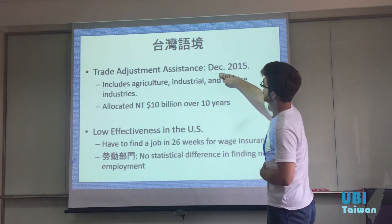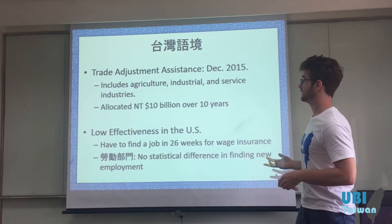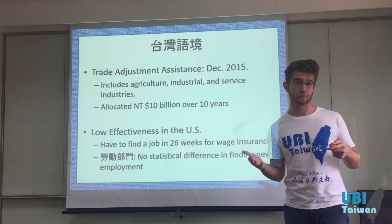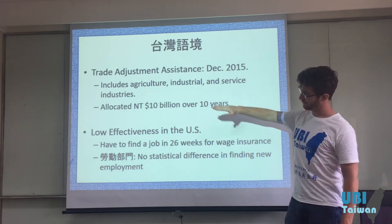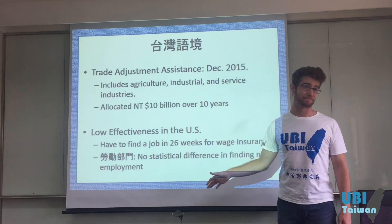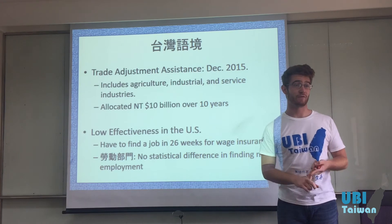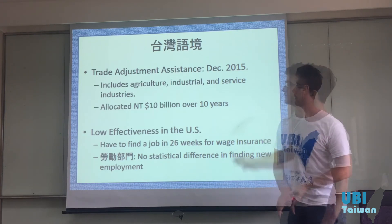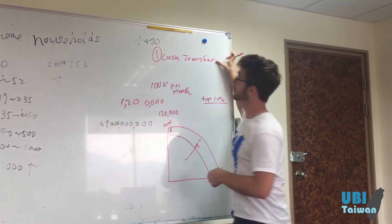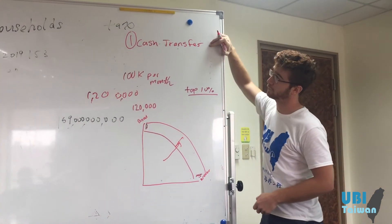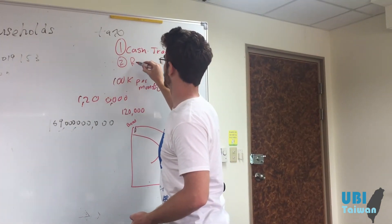This is how it relates back to Taiwan. In December 2015, Taiwan passed what they call Trade Adjustment Assistance — a policy that reimburses workers who lose their jobs because of trade, including industrial and service industries. The problem is there wasn't actually a lot of money put into it, and while it might help people displaced due to trade, it's not going to be available to people who lost their jobs due to domestic automation. These programs are similar to UBI in two ways: first, it's a cash transfer — they straight up transfer cash to you; and second, it's also in response to work.